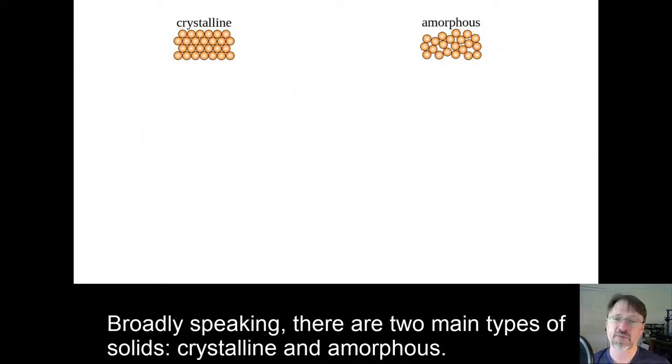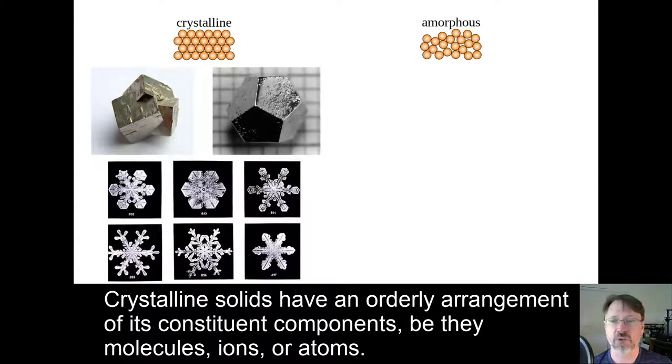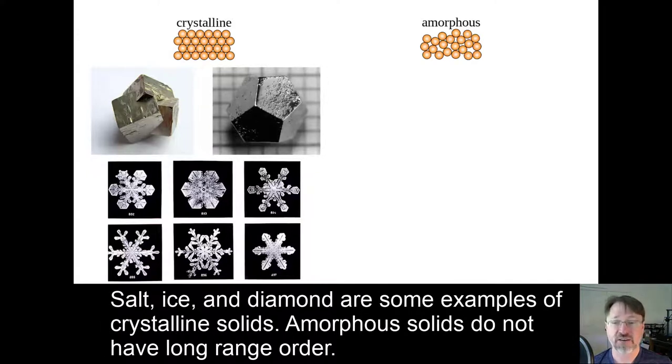Broadly speaking, there are two main types of solids: crystalline and amorphous. Crystalline solids have an orderly arrangement of their constituent components, be they molecules, ions, or atoms. In many cases, this order is long-range enough that we can visually see the ordering as regular faceted crystals. Salt, ice, and diamond are some examples of crystalline solids.